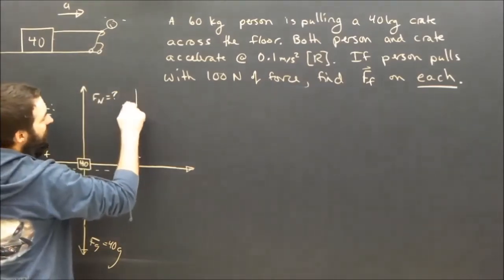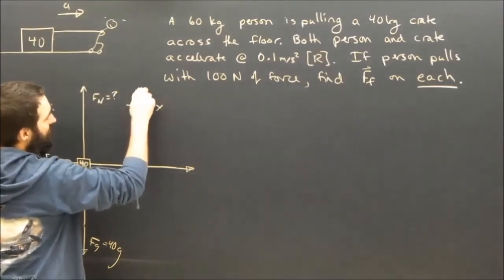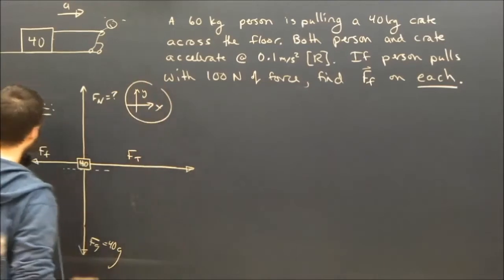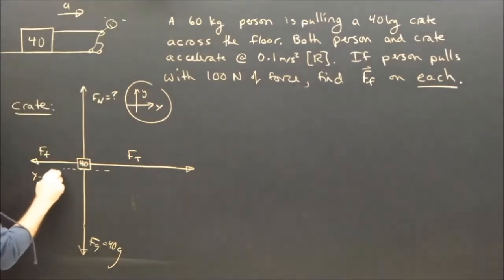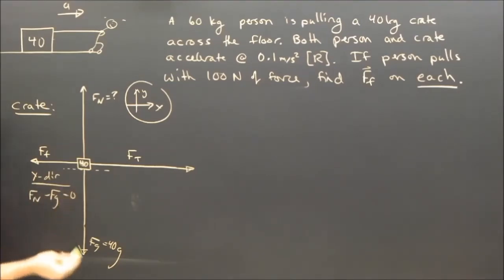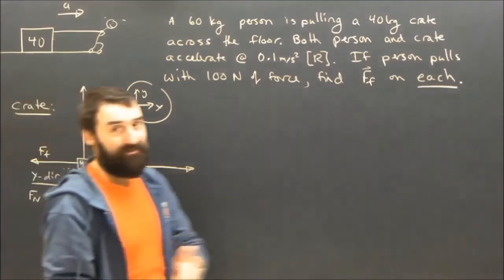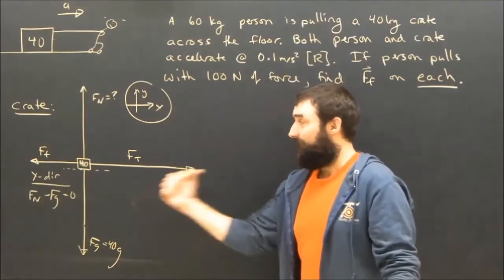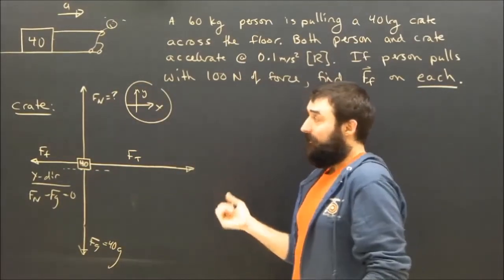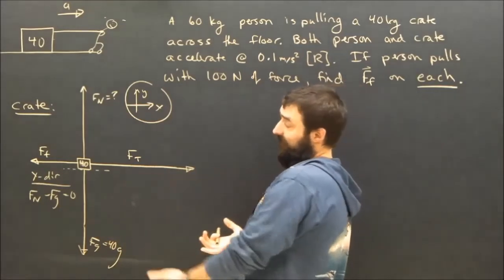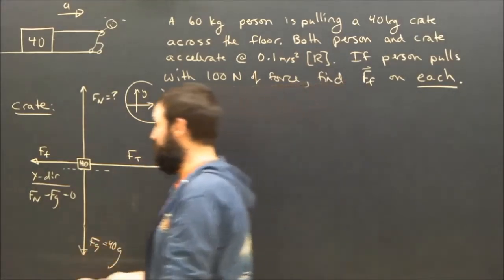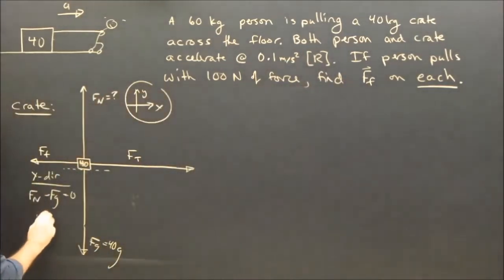He's accelerating to the right, so I'll call x to the right for the whole problem. I don't really need to do my y equation for anything, but I'm in the habit of doing it. Fn minus Fg is equal to Ma. Sorry, it's equal to 0, because the thing is accelerating to the right, therefore it's not accelerating up or down. So, since it's not accelerating up or down, and there's only two forces, they've got to be equal and balanced.